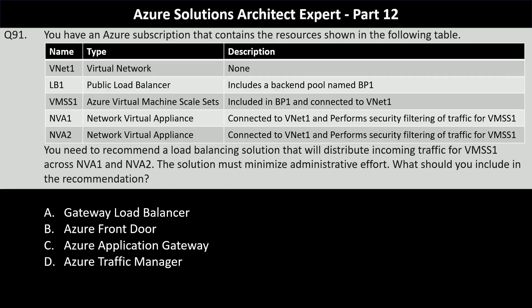You have an Azure subscription that contains the resources shown in the following table. You have five resources: VNet1 (a virtual network), LB1 (a public load balancer with a backend pool named BP1), VMSS1 (an Azure virtual machine scale set included in BP1 and connected to VNet1).